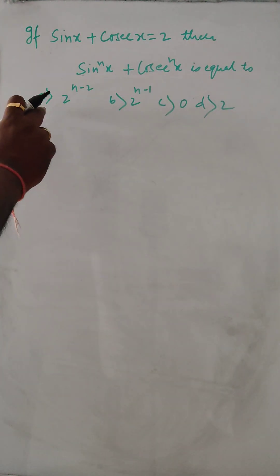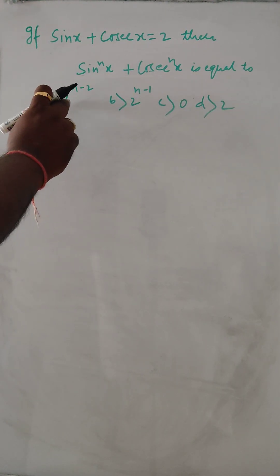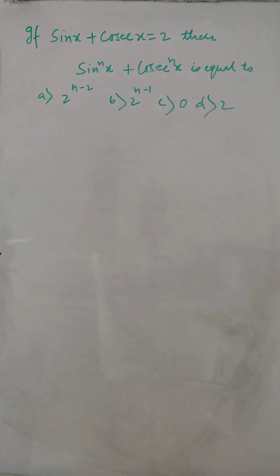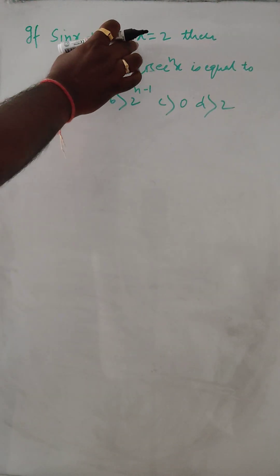Here the 4 option is given: a) n minus 2 to the power n minus 2, b) to the power n minus 1, and c) 0, d) 2. So this is given correctly.